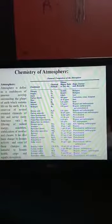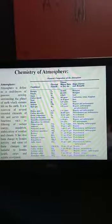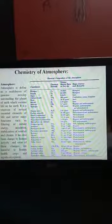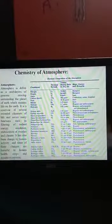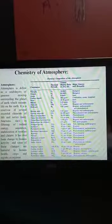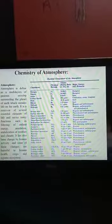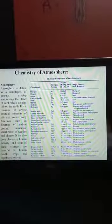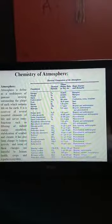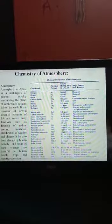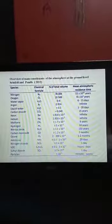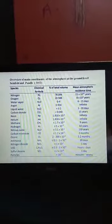biogenics and anthropogenics. Hydrogen - biogenic, anthropogenic, biogenic, and photochemical. Nitrous oxide - biogenic and anthropogenic. Ozone - photochemical. Ammonia - biogenic. Carbon disulfide - biogenic and anthropogenic. Overview of main constituents of the atmosphere at the ground level.